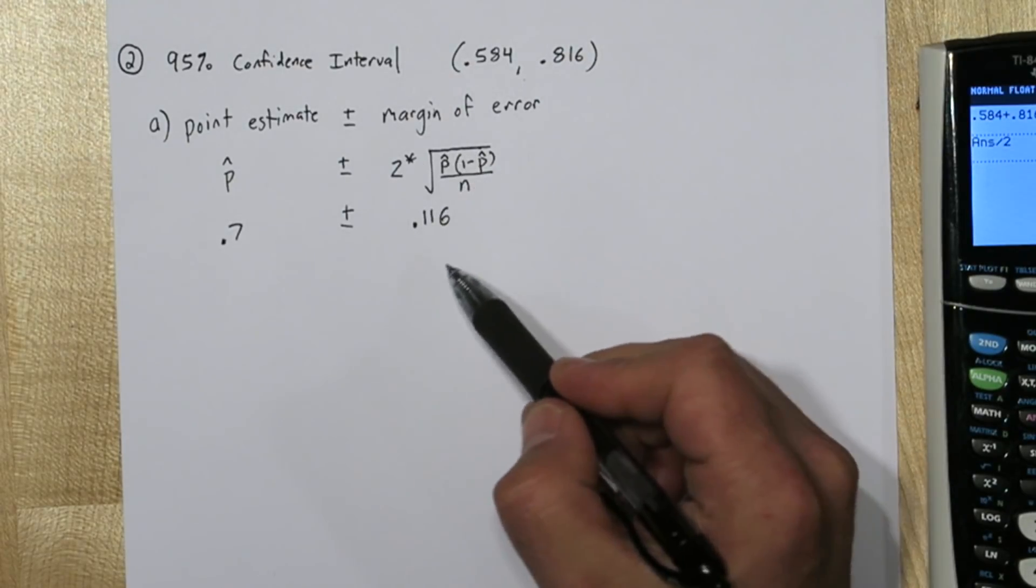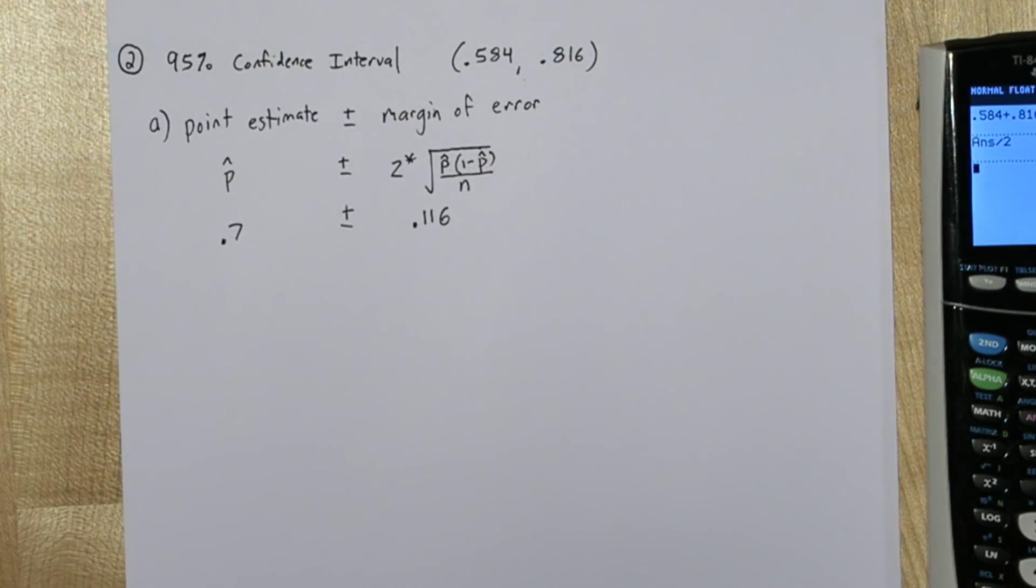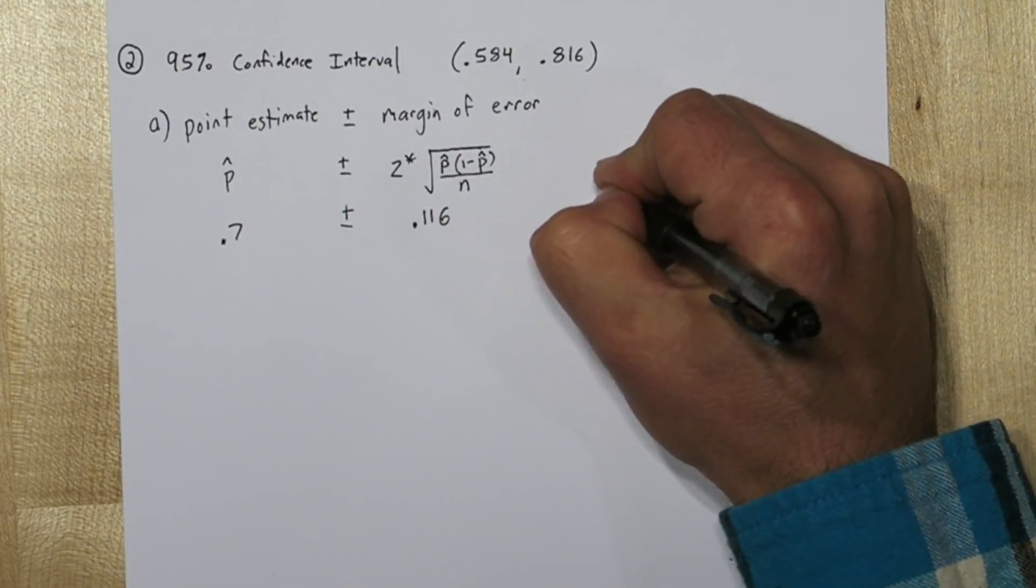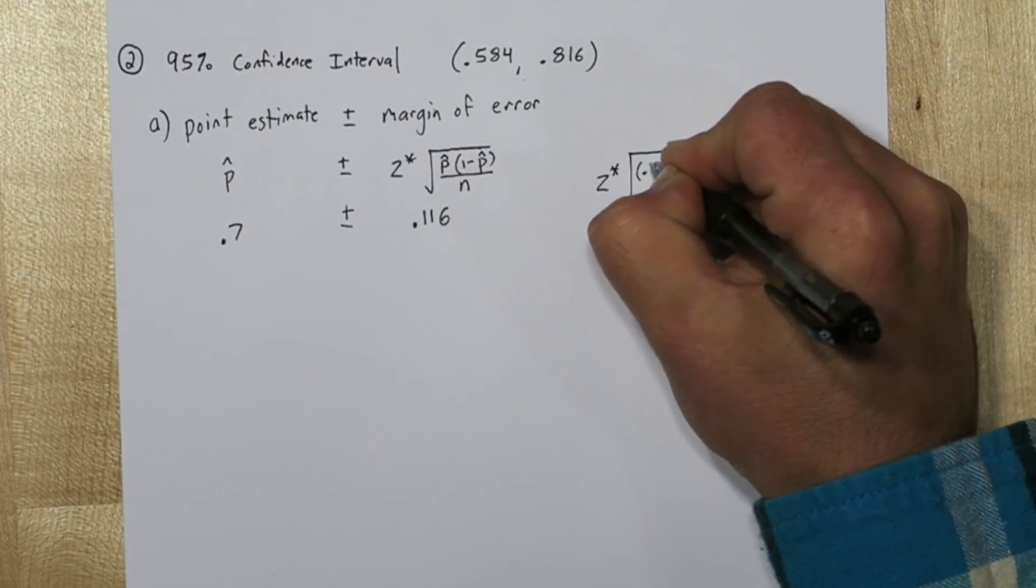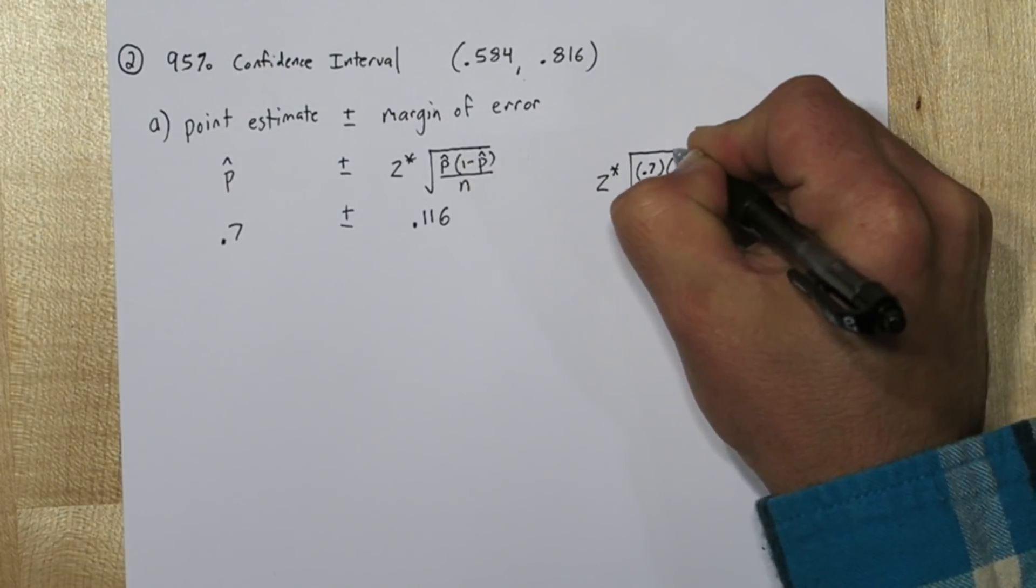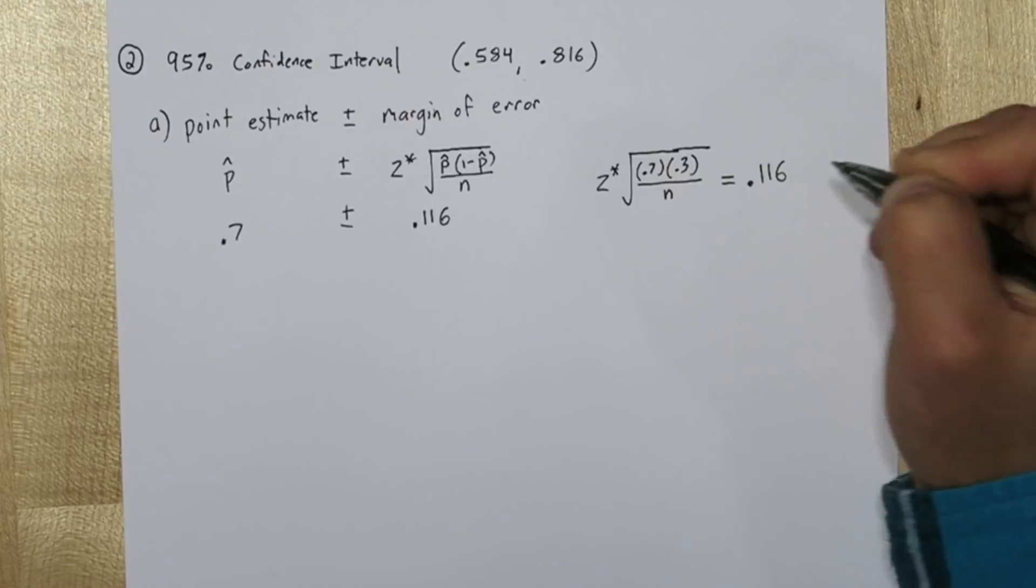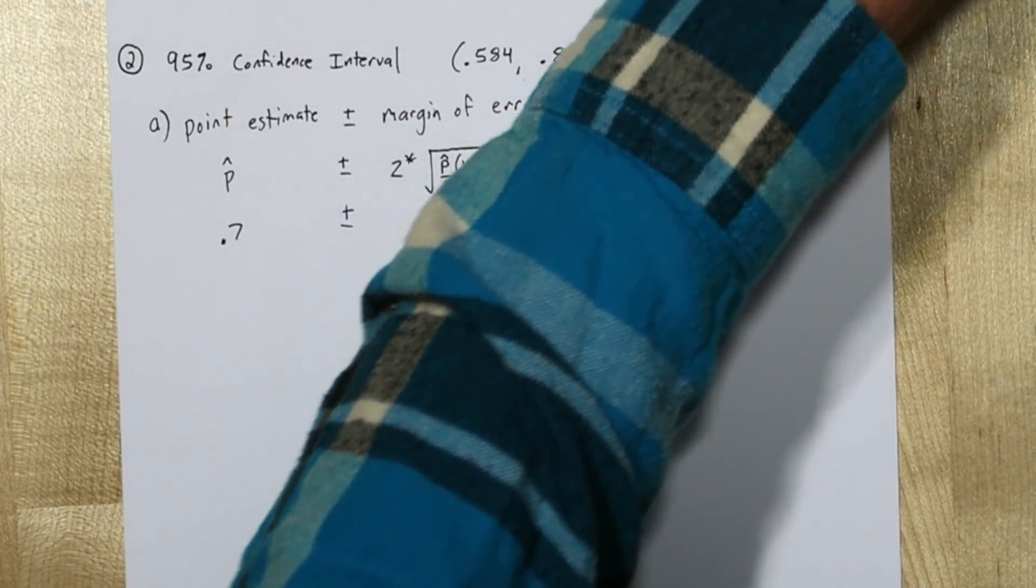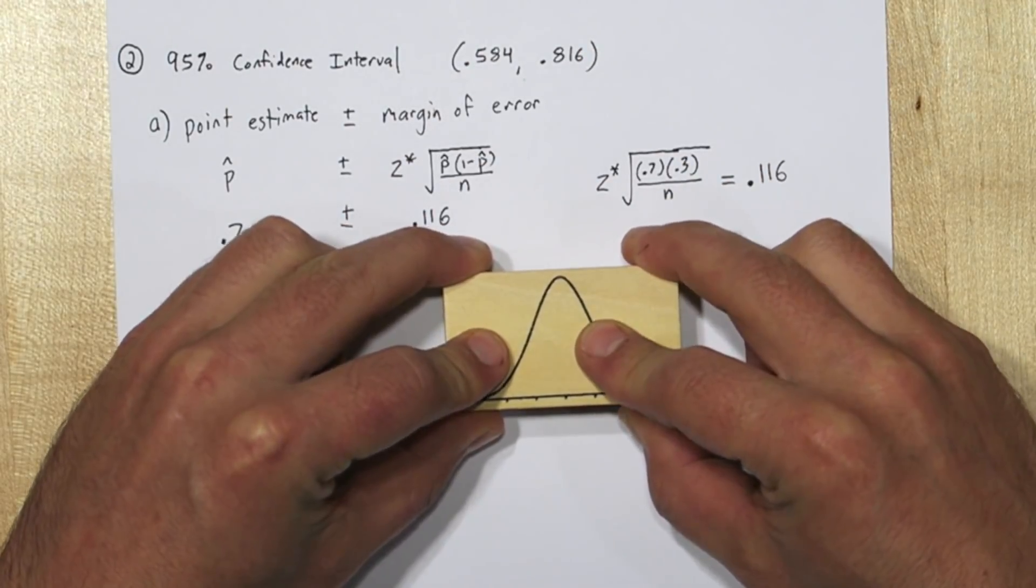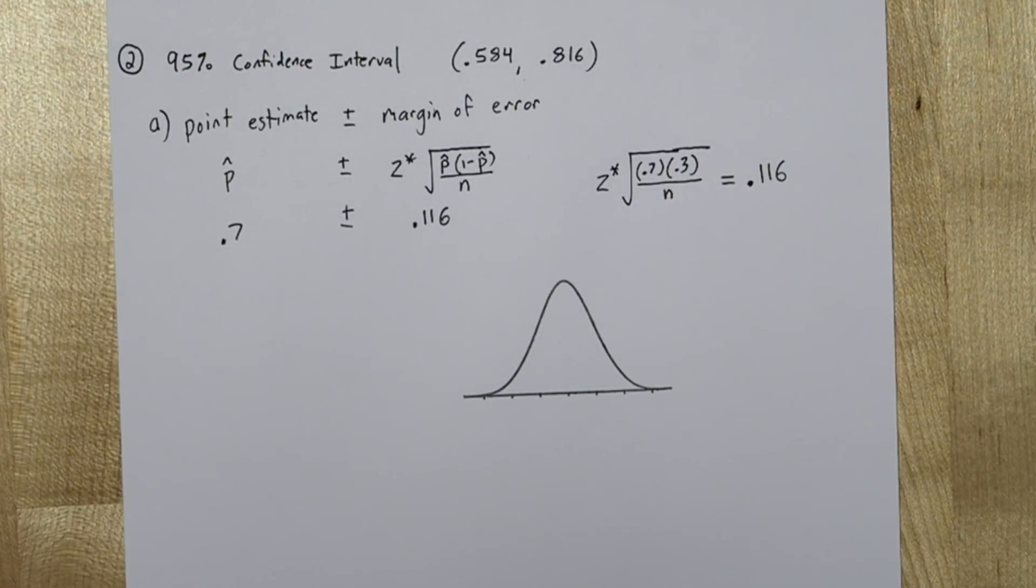So this quantity here has to equal 0.116. Let's fill in what we have. We know p-hat is 0.7, so 1 minus p-hat, the complement, is 0.3, and that whole margin of error has to equal 0.116. To figure out what z-star is, let's start by stamping a normal distribution. Now if you don't have one of these stamps yet, get one on Amazon, they're awesome.